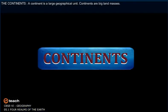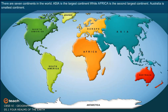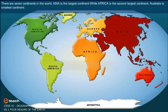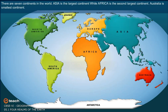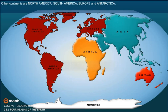A continent is the largest geographical unit. Continents are big land masses. There are seven continents in the world. Asia is the largest continent, while Africa is the second largest continent, and Australia is the smallest continent. Other continents are North America, South America, Europe, and Antarctica.